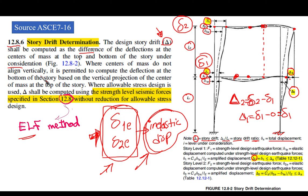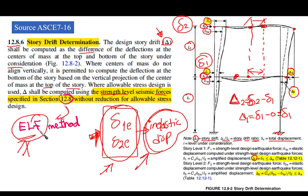Where centers of mass do not align vertically, it is permitted to compute the deflection at the bottom of the story based on the vertical projection of the center of mass at the top of the story. Where allowable stress design is used, delta shall be computed using strength-level seismic forces specified in section 12.8 — the equivalent lateral force method — without reduction for allowable stress design. So remember: we have δXe (elastic), δ (inelastic), and Δ (story drift).